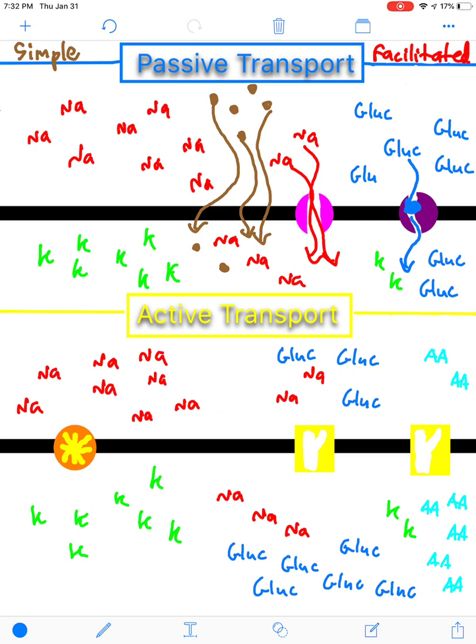So, all of these methods for passive transport require no ATP. And they're all going down their gradient, whether it is directly through the membrane or requiring some kind of facilitation through a transport protein.